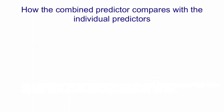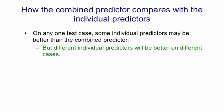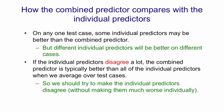Now let's try and analyze how an individual model compares with an average of models. On any one test case, some individual predictors may be better than the combined predictor, but different individual predictors will be better on different cases. If the individual predictors disagree a lot, the combined predictor is typically better than all of the individual predictors when we average over test cases. So we should aim to make the individual predictors disagree without making them be poor predictors. The art is to have individual predictors that make very different errors from one another, but are each fairly accurate.